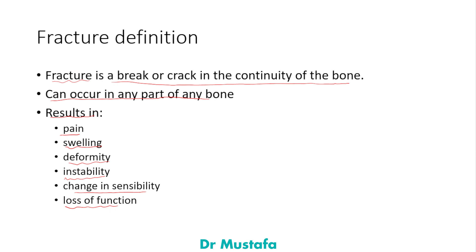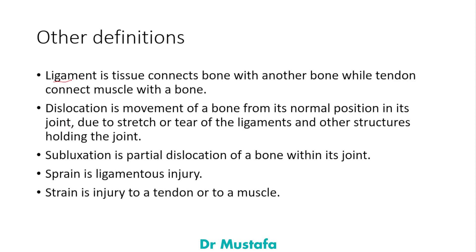A ligament is a tissue that connects one bone with another bone, while a tendon is a tissue that connects muscle with a bone.